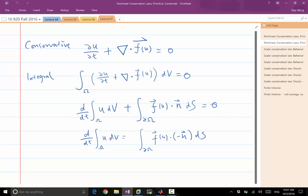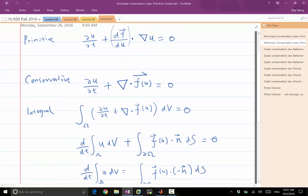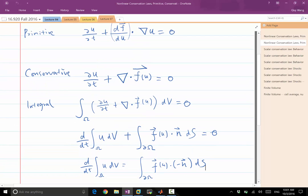All right, so this is how the conservation law works in multiple dimensions. Any questions? So we will shelve this multi-dimension conservation law for later on when we discuss finite volume in multiple dimensions. This lecture will focus on only the one-dimension scalar conservation law. And the purpose of this is for us to have an intuitive understanding of how the solution in 1D looks like, and for us to derive our finite volume scheme.